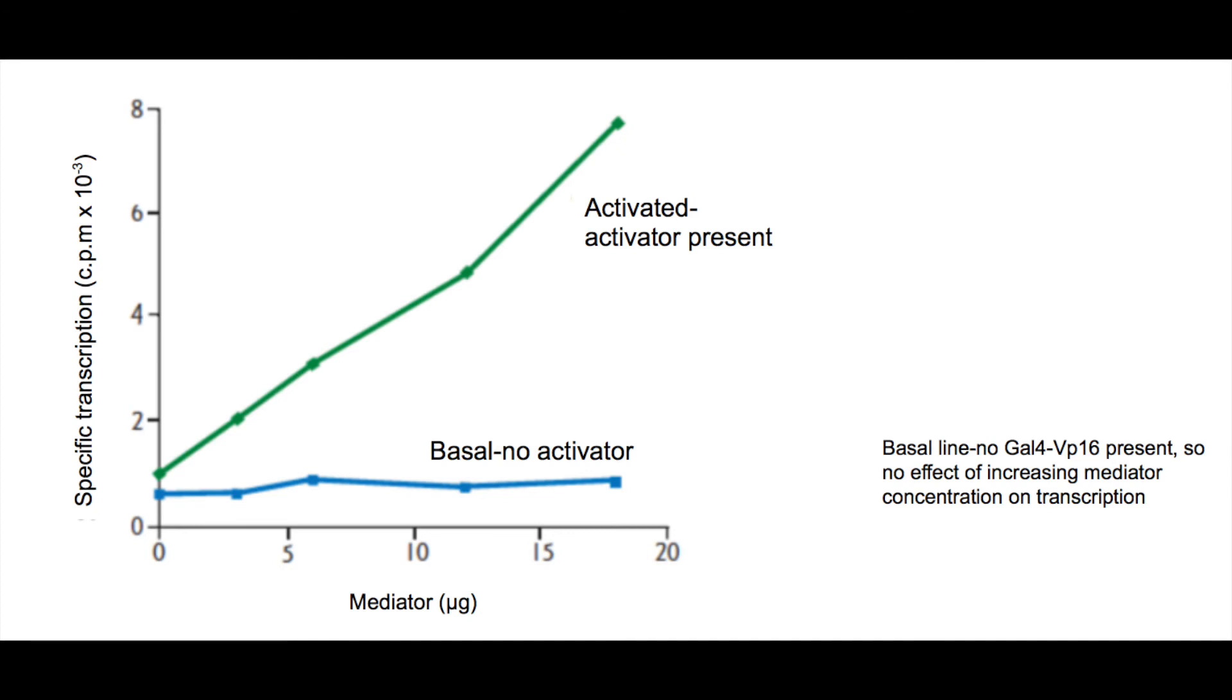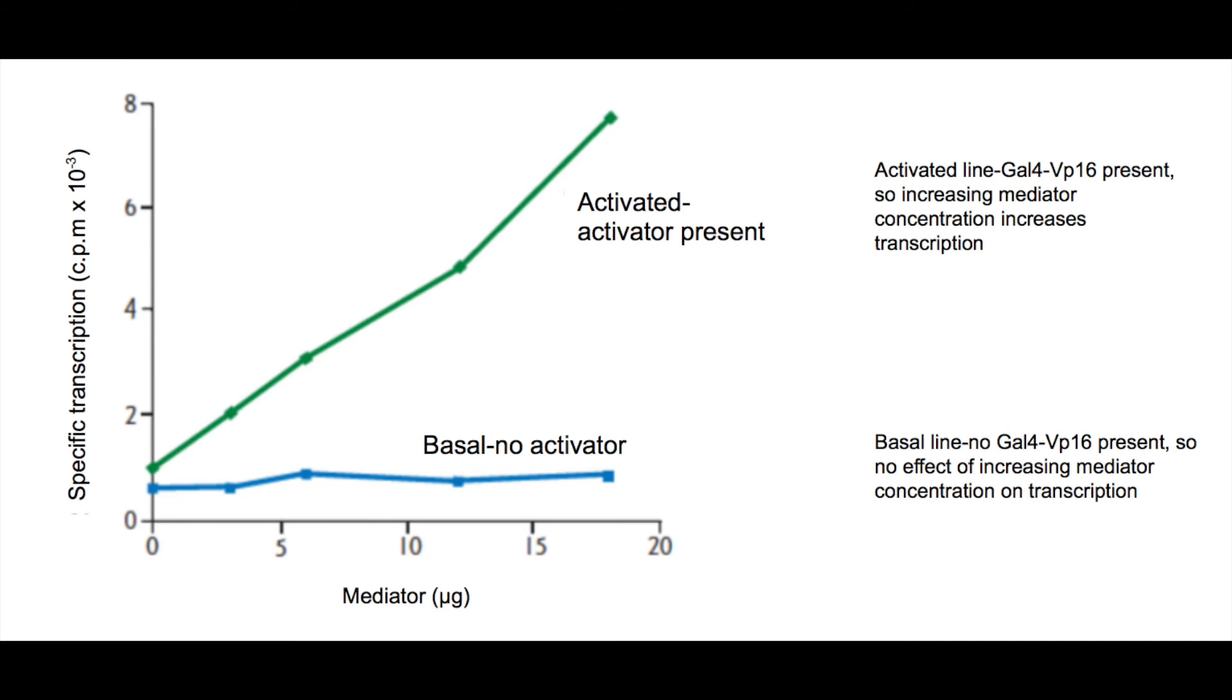Hence, why lanes 3 through 6 on the gel should have had identical bands. When the activator is present and scientists increase the concentration of mediator, there is an increasing amount of transcription, as shown by the almost linear rising green line labeled activated on the graph. These results show that mediator affects transcription when there is activator present.